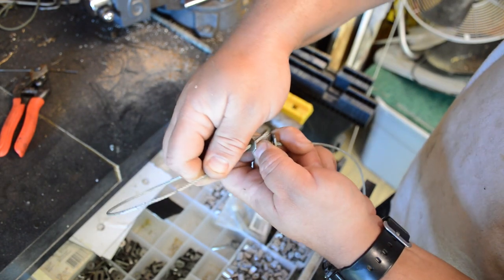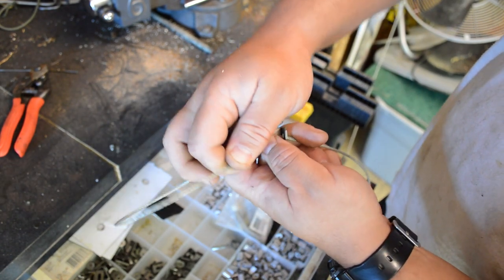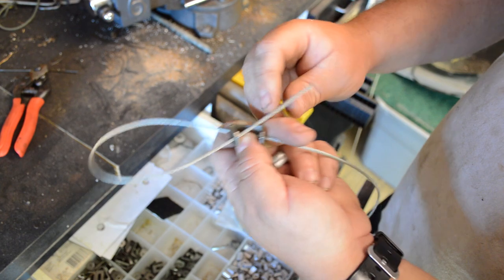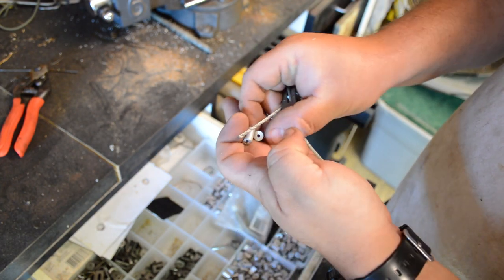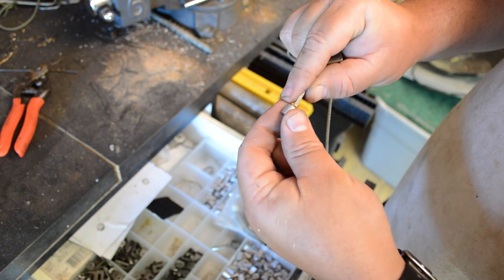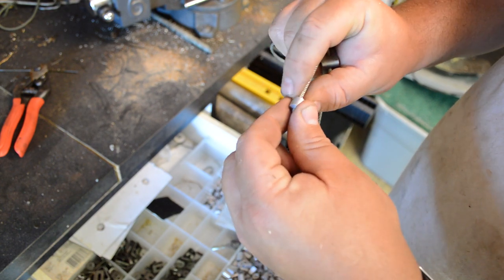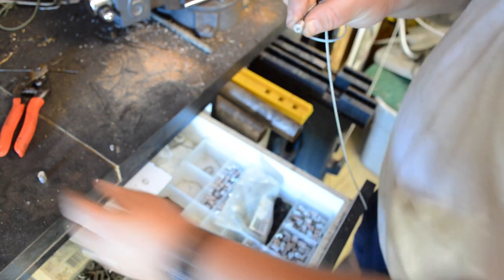This part's a little difficult if you haven't been doing it in a while like I have. Put it through there, then take your single ferrule and crimp that ferrule on there. Now we'll go over to the crimping station and I'll show you how to do that.